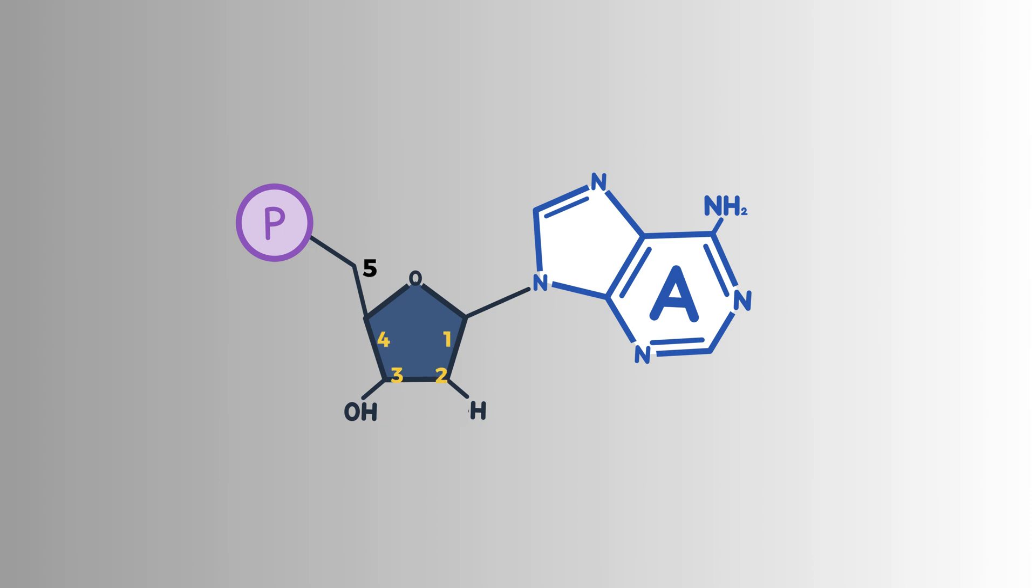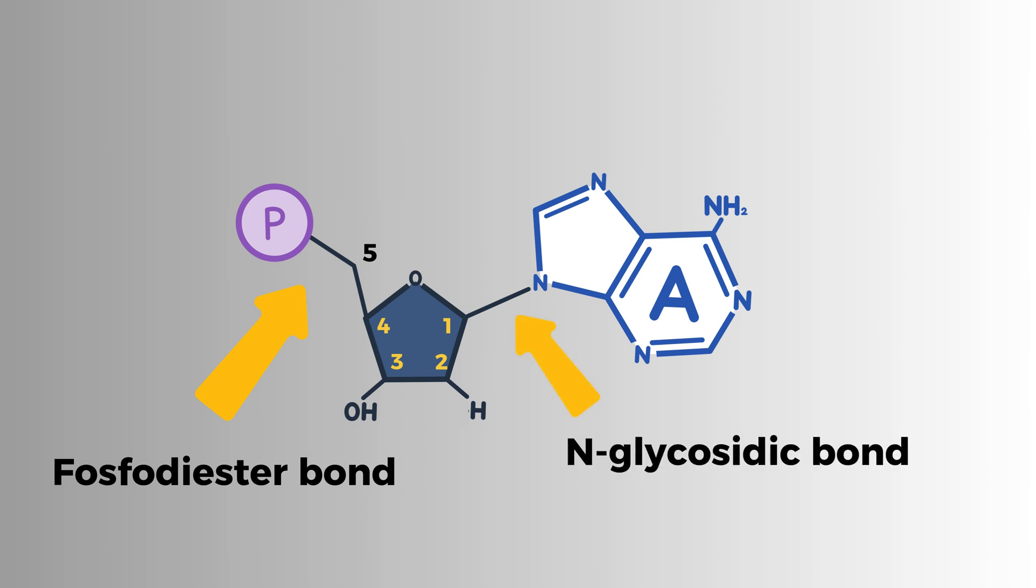...has five carbon atoms. On carbon number 5, there's a phosphate group attached. This forms a bond called a phosphodiester bond. On carbon number 1, we find one of the four nitrogenous bases: adenine, guanine, thymine, or cytosine. This connection is called an N-glycosidic bond.